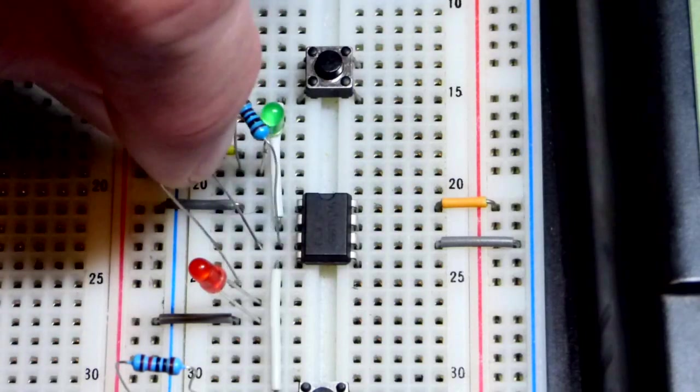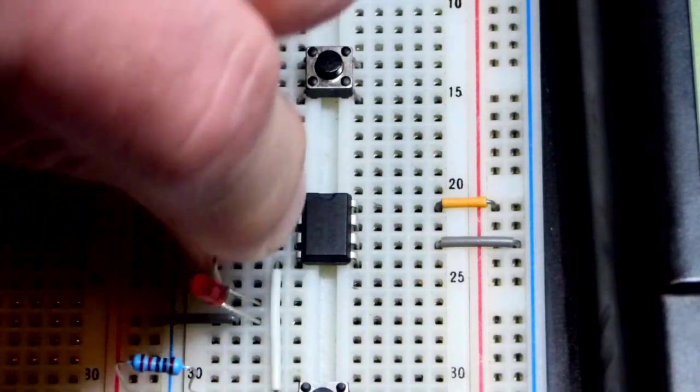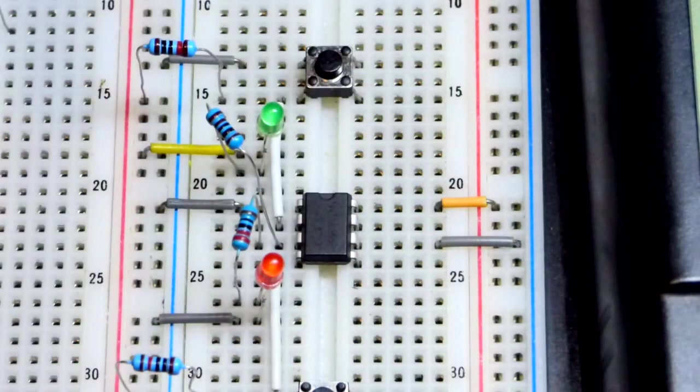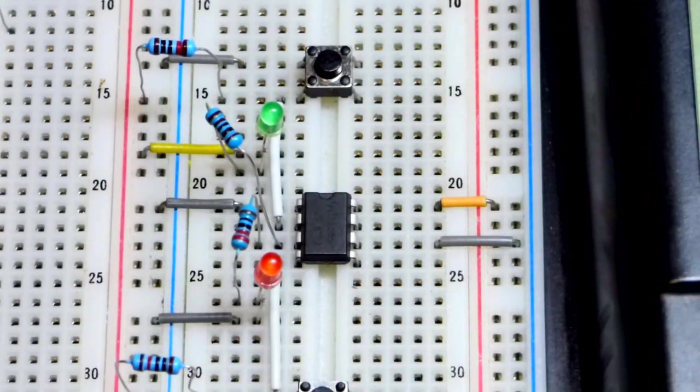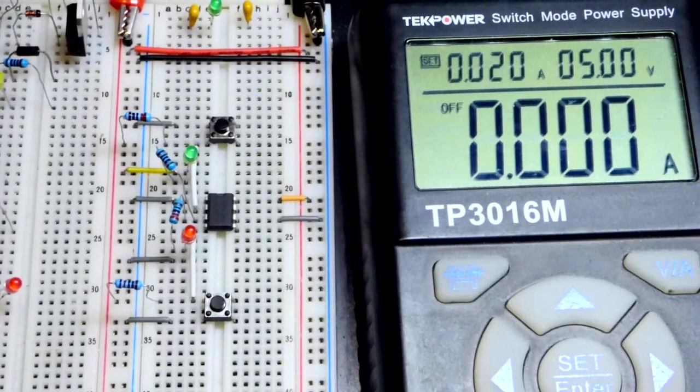A 220 ohm resistor is going to go from the output to the long lead, the anode of the red LED, and the short lead, the cathode, is to that gray jumper right over there. Now we are all done wiring up.